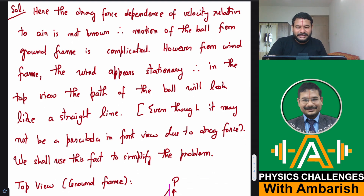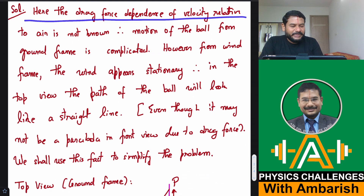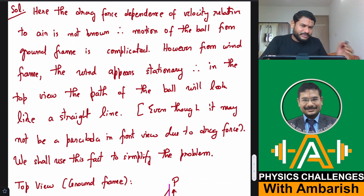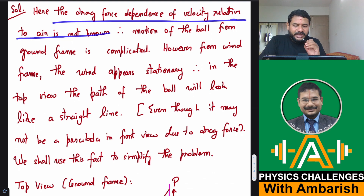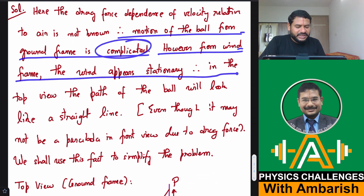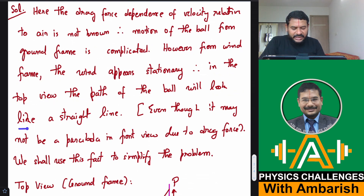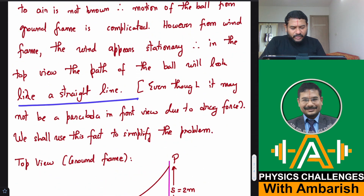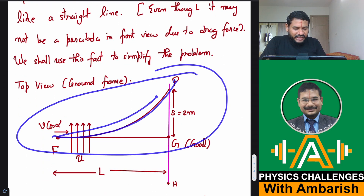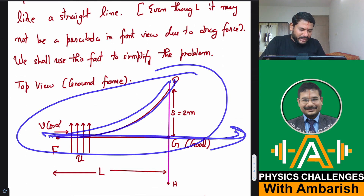From the wind frame, the motion of the ball is in a vertical plane. The drag force dependence on velocity relative to air is not known — we can't apply Stokes' law, and we don't know whether it's proportional to v, v-squared, or some other complicated function. Therefore, the motion from the ground frame is complicated. However, from the wind frame, the wind appears stationary, and in the top view the path of the ball will look like a straight line.